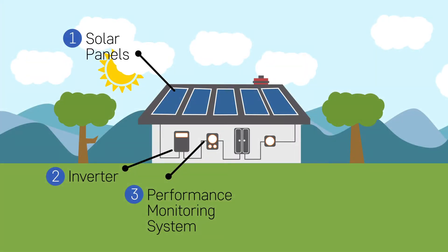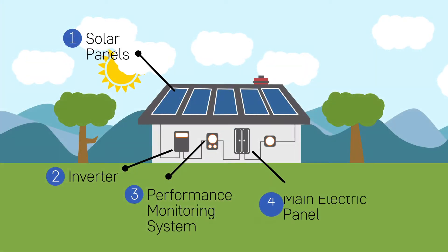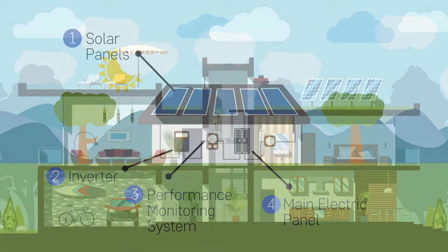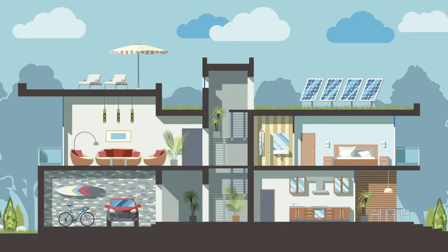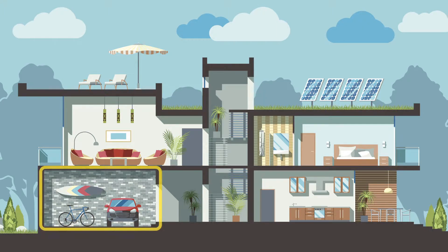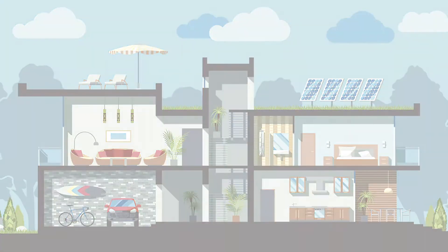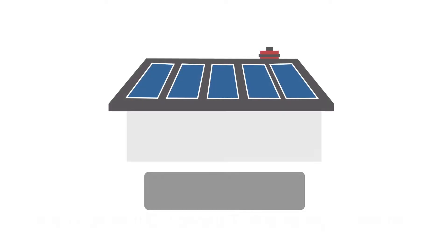Once it goes through there, it then connects into number four, which is your main electric panel — that's where you have all those switches on the side of your house that connect to your kitchen, bathroom, living room, bedrooms, and all the outlets throughout the house. That's where the electricity is then dispersed throughout the home.